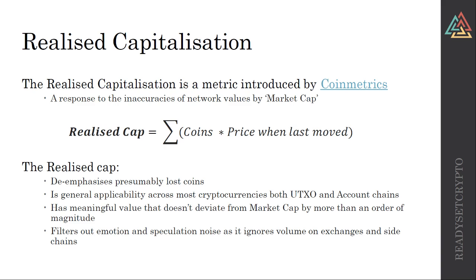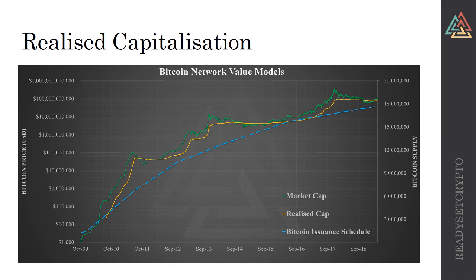The realized cap has general applicability across both UTXO chains like Bitcoin and account chains like Ethereum. It has meaningful value and doesn't deviate from the market cap by more than an order of magnitude, so it's still an appreciable metric. It effectively filters out a lot of the emotion, speculation, and noise. One thing to note is it does ignore volume on exchanges and sidechains, removing a lot of the trading back and forth, though it also loses some signal when it comes to sidechains and Lightning Network.